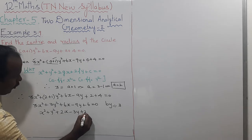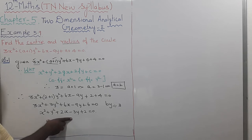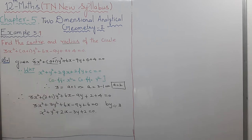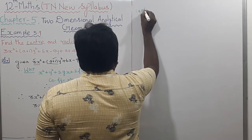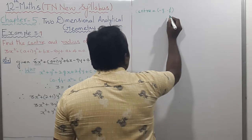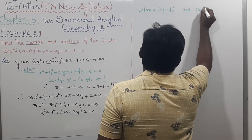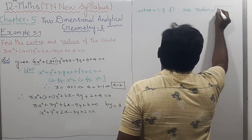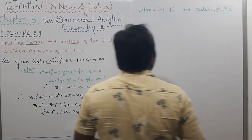That is the general equation of the circle. If you have the general equation, it will be easier to find the center and radius. The center is equal to (-g, -f) and the radius is equal to √(g² + f² - c).